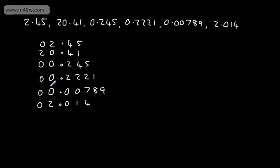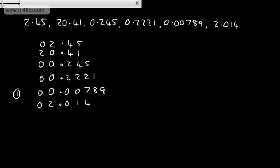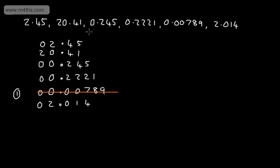We can see the smallest is going to come from one of these three — we have 2.45 and 2.014 with 2 in the units, and the others with 0. So we look across: those three all have 0 in the units, so we now look at the tenths column. We can see that 0.00789 has 0 in the tenths, which is the smallest value. So that is going to be the smallest overall — we can put a faint line through that.